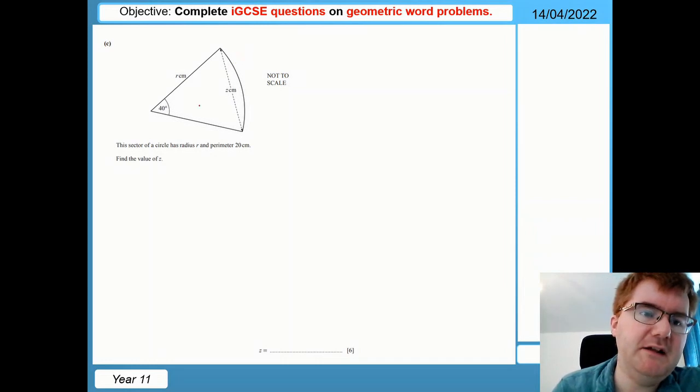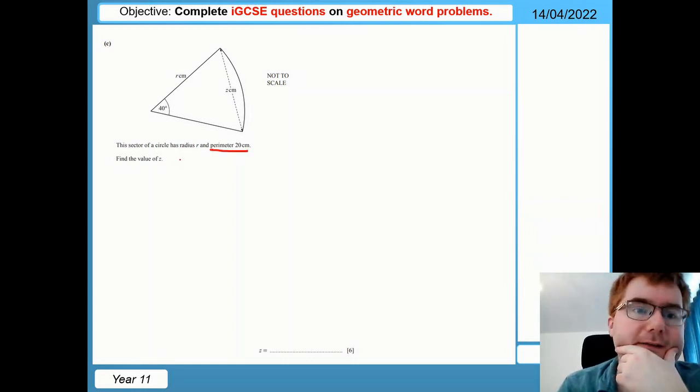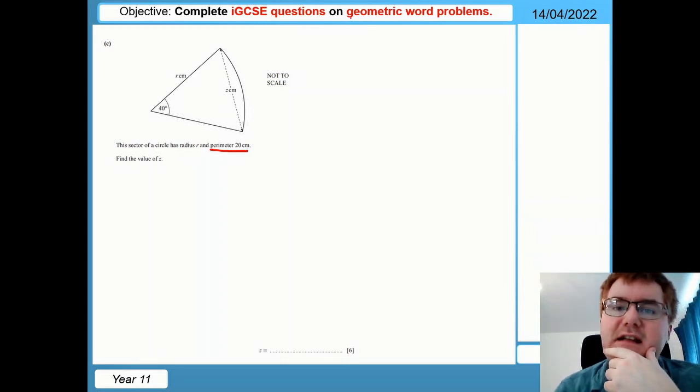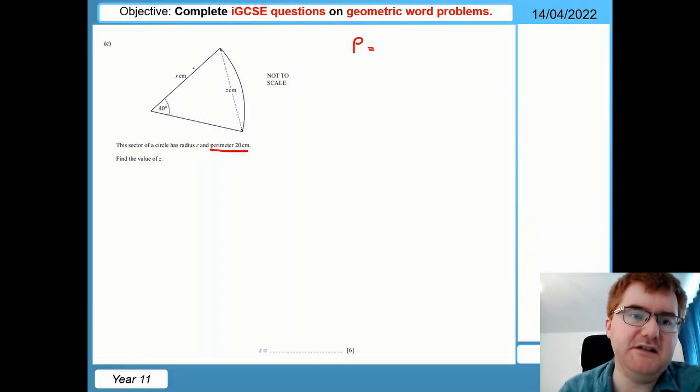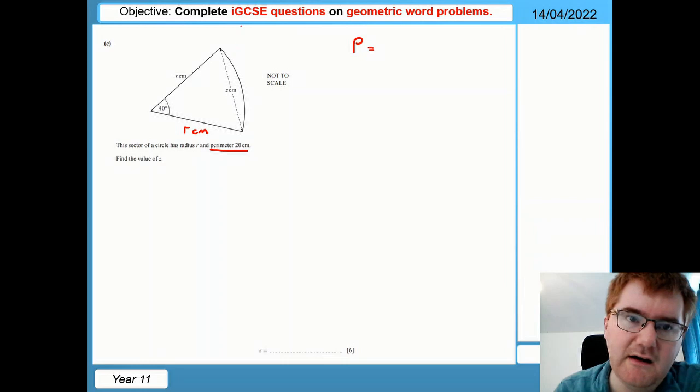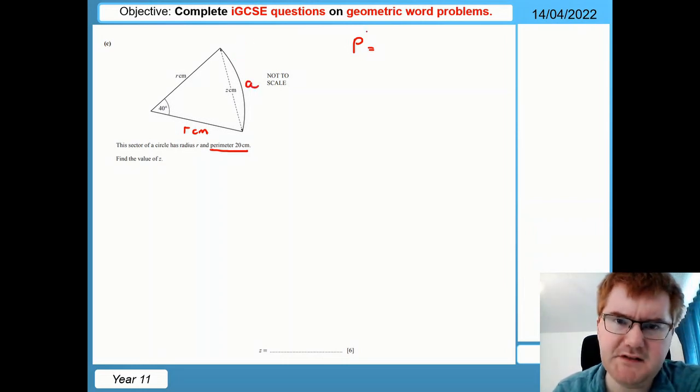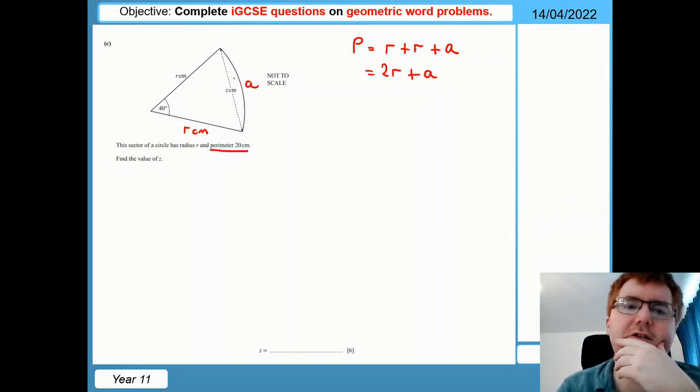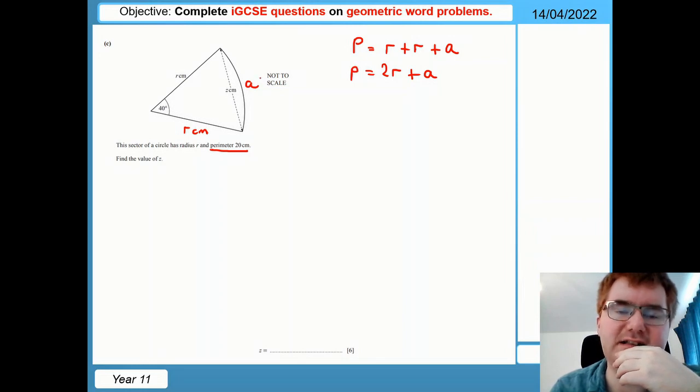Right, and on to the more difficult question here. So the sector here of a circle has radius R and perimeter 20 centimeters, that favourite number of theirs. And we need to find the value of Z. So let's think about what the perimeter actually stands for here. So the perimeter of this sector is the two radiuses. Remember, this is a radius as well, plus this arc length as well. Let's just call that A for arc. So to work out the perimeter, we need to do R plus R plus A. Which we can simplify very simply to 2R plus A.